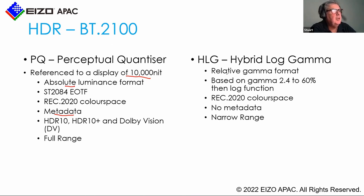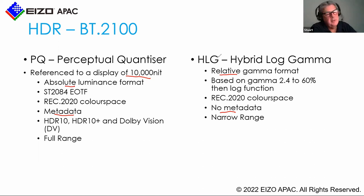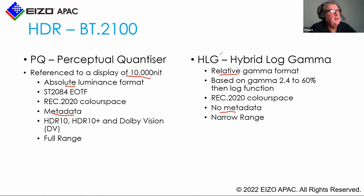The HLG — Hybrid Log Gamma — was designed for broadcast. It's a relative system with no metadata, so it's much easier to use for live events like FIFA football games or broadcasting. Blue Planet was also released in Hybrid Log Gamma. So the two critical differences between PQ and HLG are: PQ is an absolute luminance format with metadata, while HLG is a relative system like Rec.709 with no metadata.